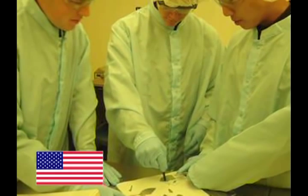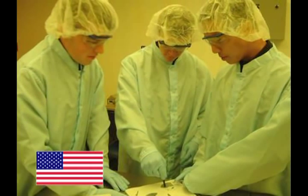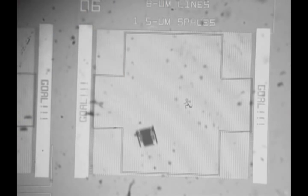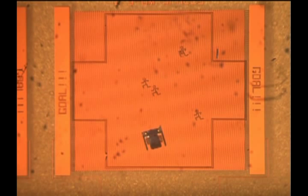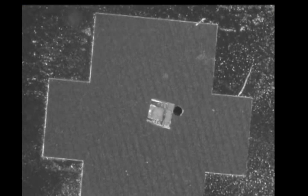At the world's first nanosoccer games last year in Atlanta, five teams from three nations squared off in events that all took place under a microscope: the two-millimeter dash, the obstacle course, and the ball handling drill.